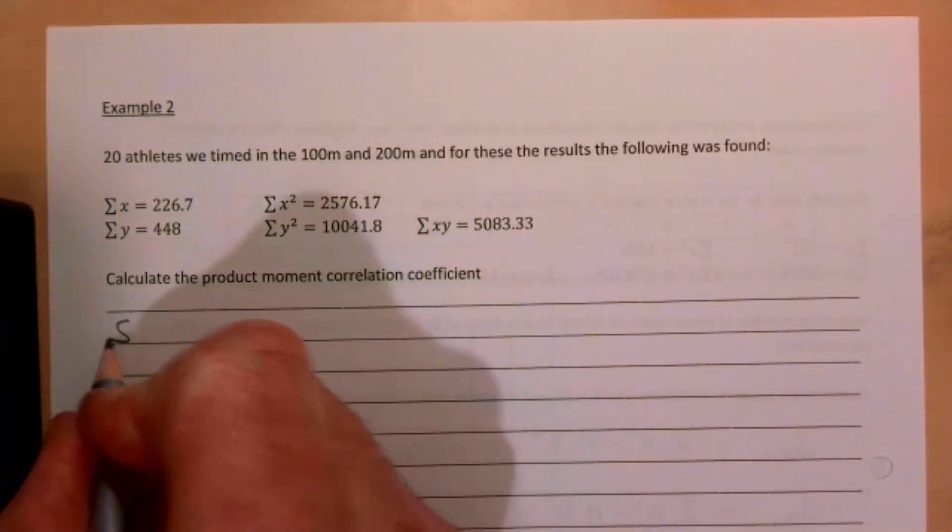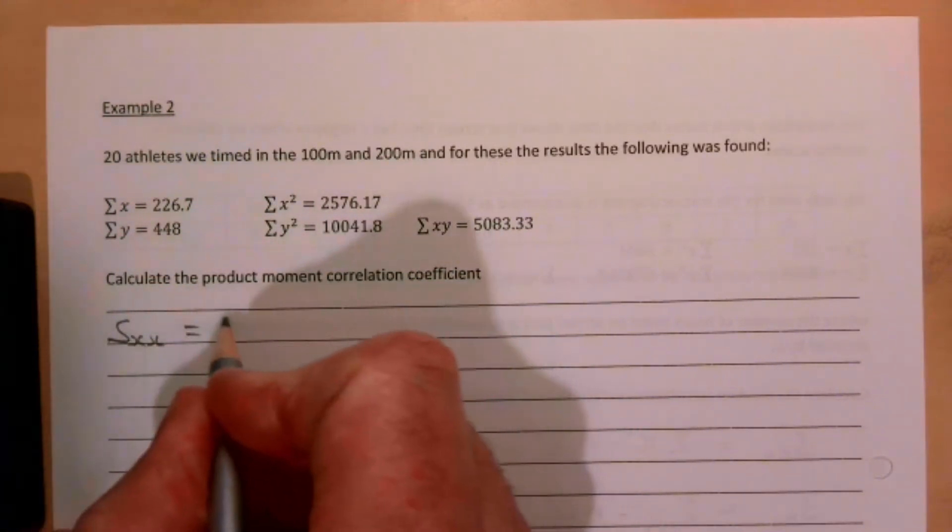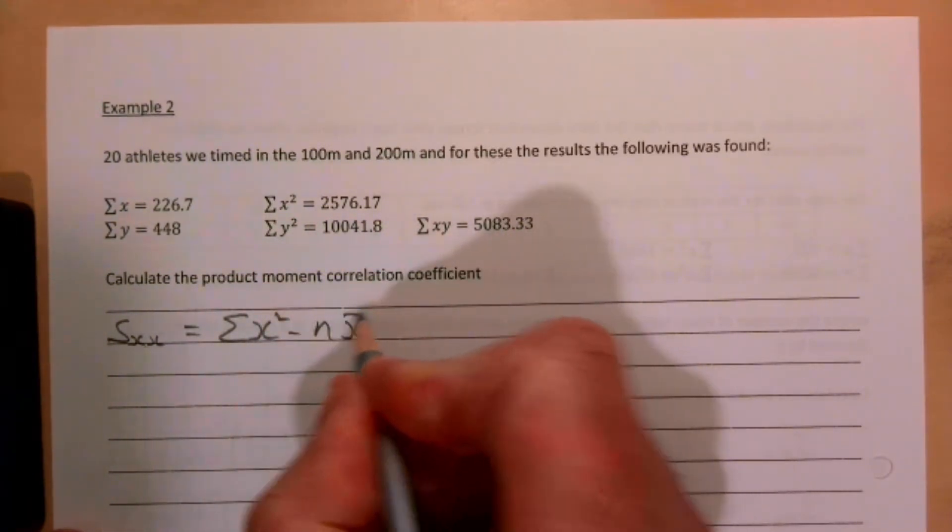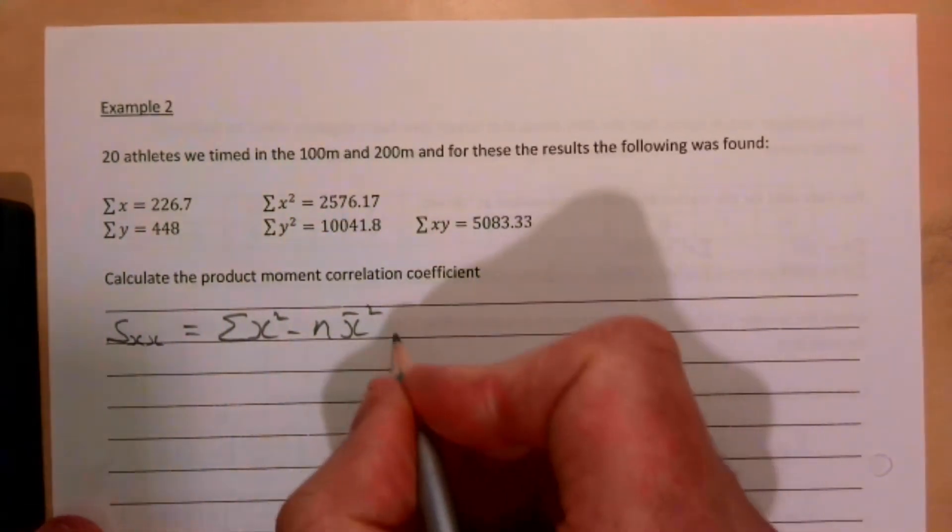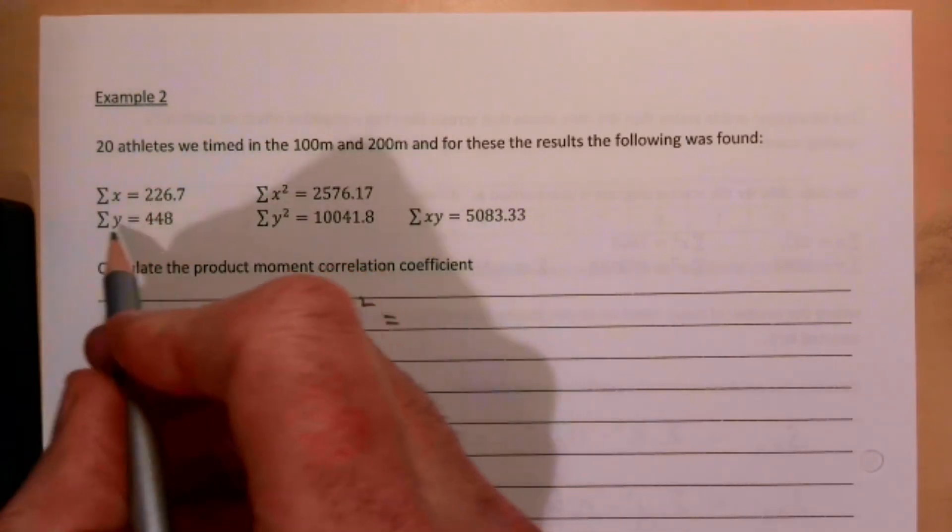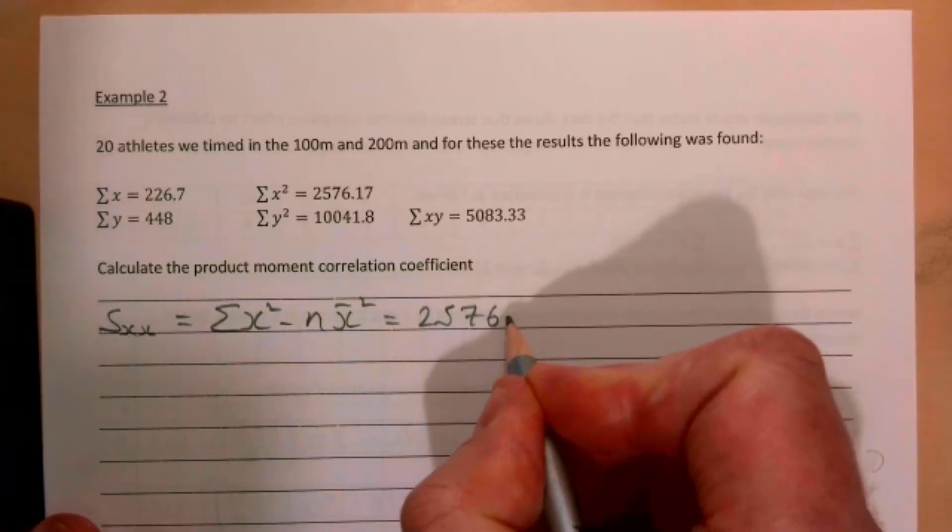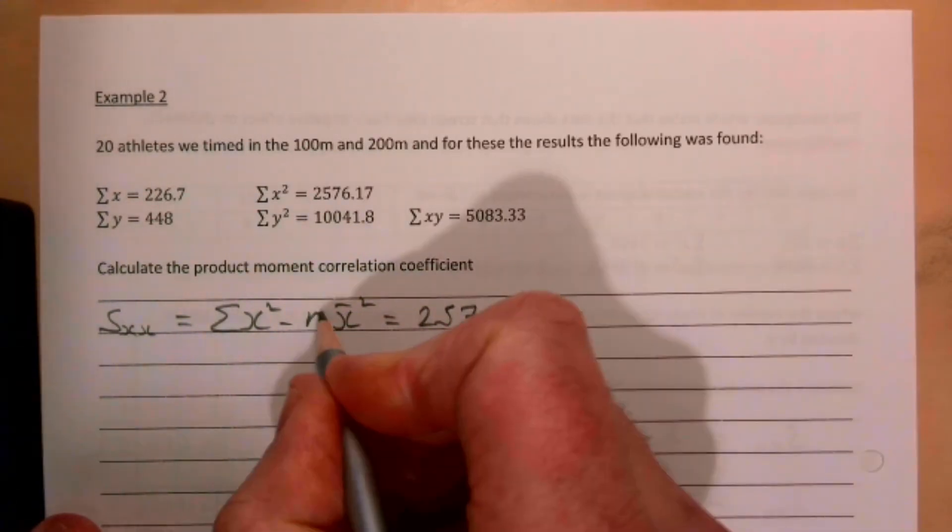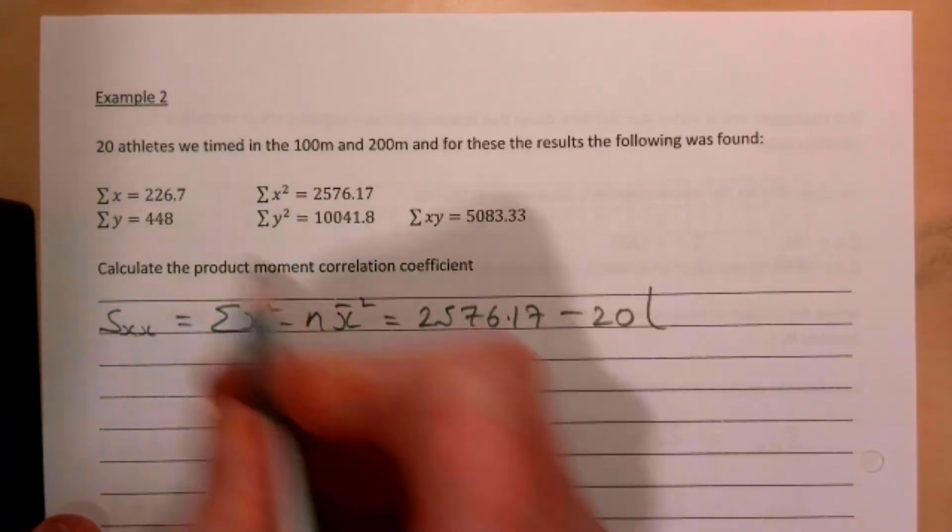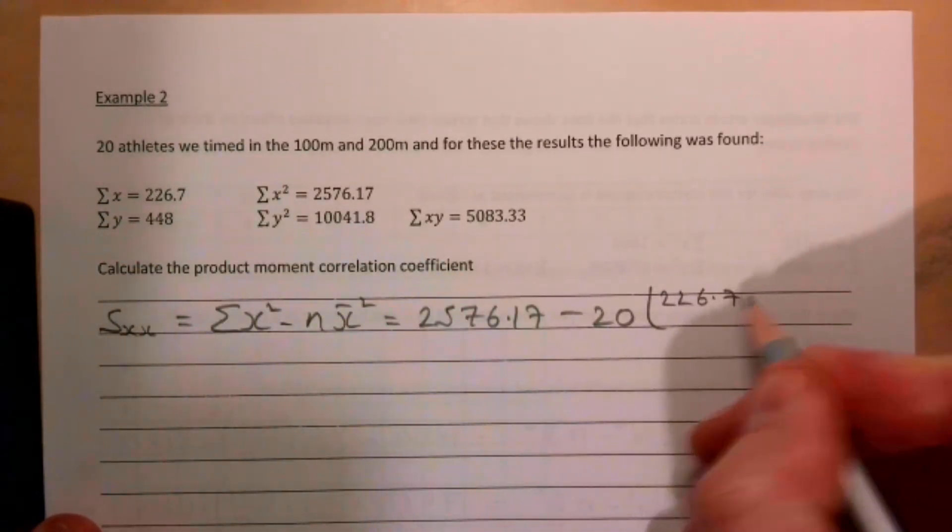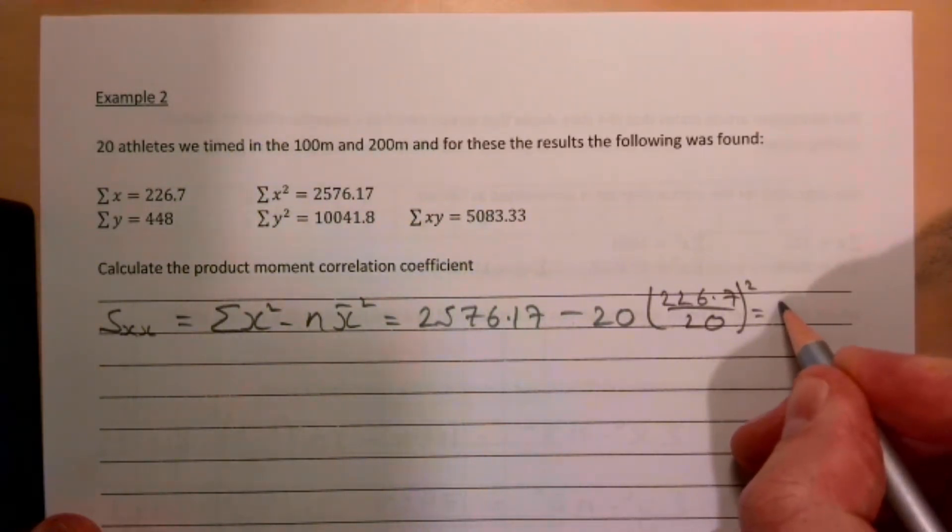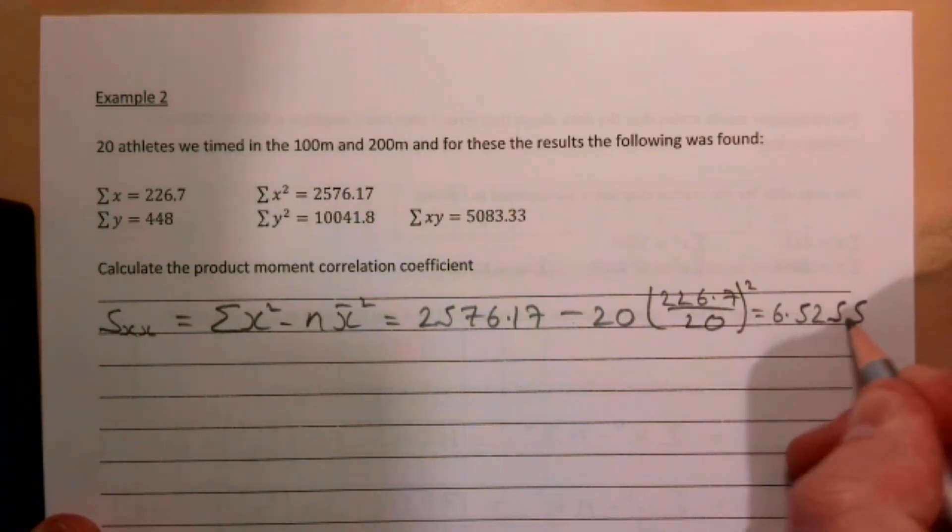We have three bits of information to work out. So Sxx, that is of course the sum of the x squareds take away n times the mean of x all squared. So that's going to be the sum of the x squared is 2576.17 take away, there's 20 athletes involved so it's 20 times, how do you work out the mean? It's going to be all the x's added up divided by how many there are, and that's all squared.